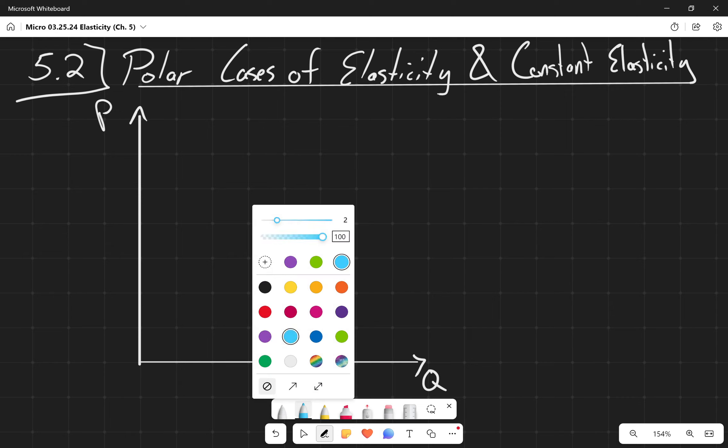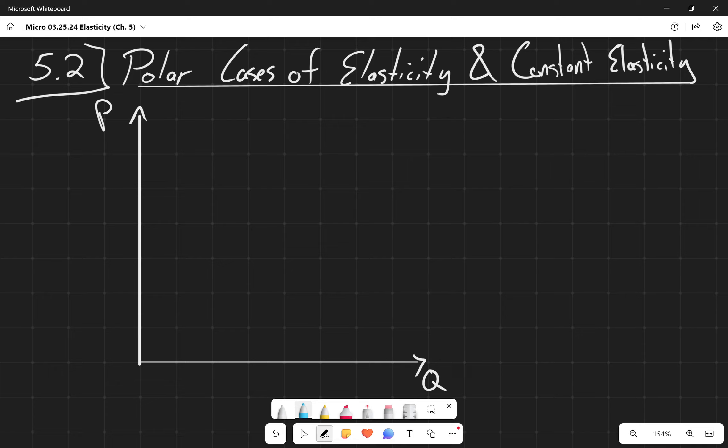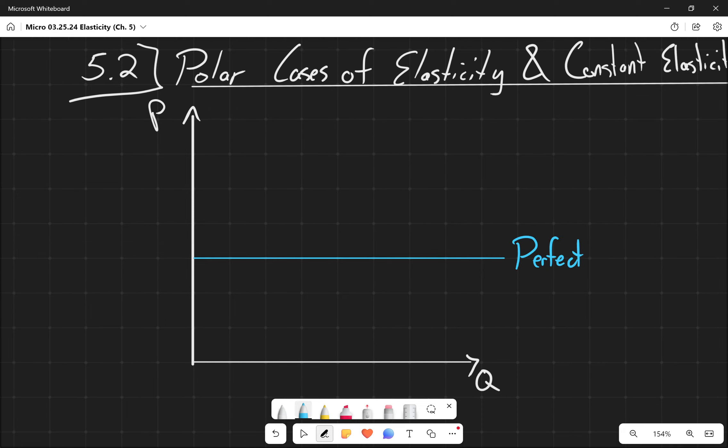It is the perfectly horizontal curve that is known as the perfectly elastic demand curve. Perfectly elastic essentially means it's like the perfect cell, super elastic, very responsive to any kind of changes in price. Specifically, it's very responsive to any kind of increase in price. It's essentially saying this is the market price.